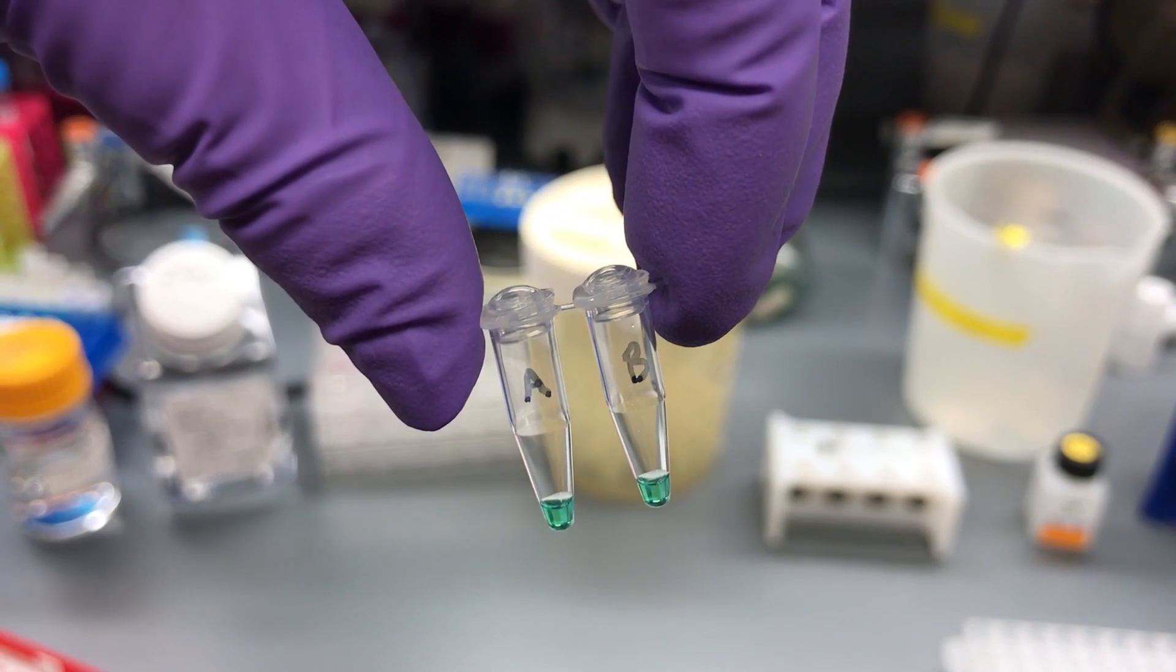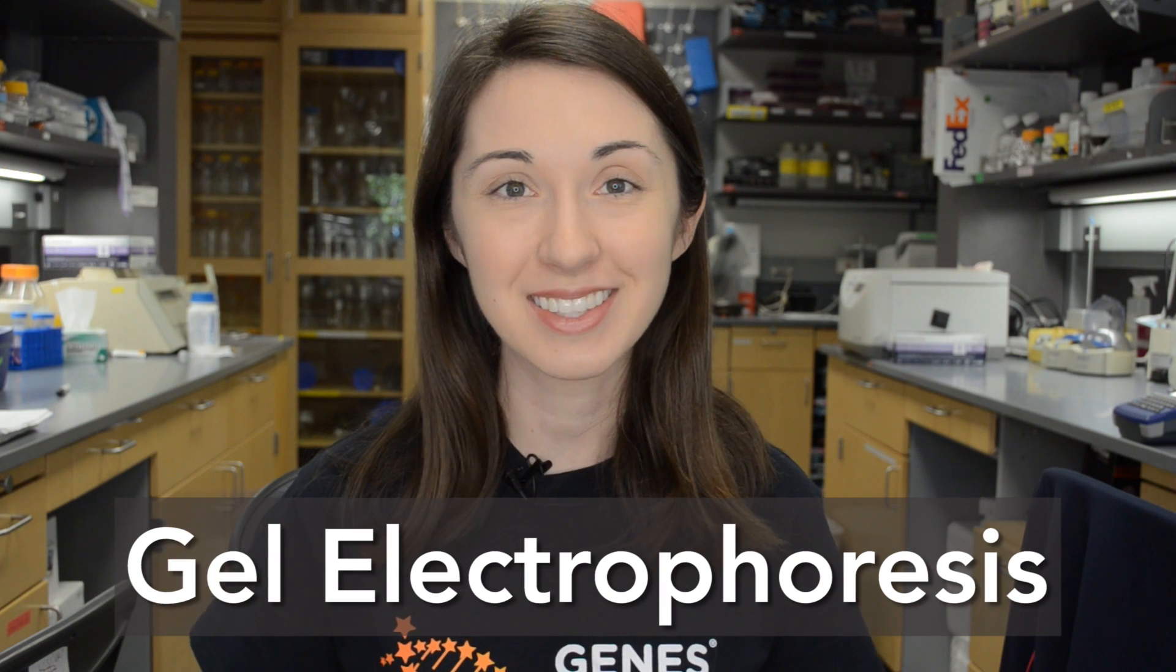But when we were done, both tubes still looked identical, so how are we going to figure out which one contains the pathogenic E. coli DNA? Well, today, we're going to talk about one way to do this, gel electrophoresis.